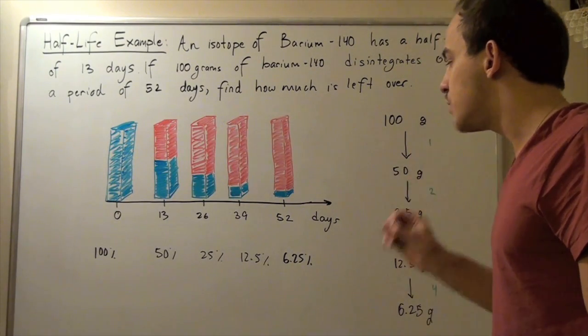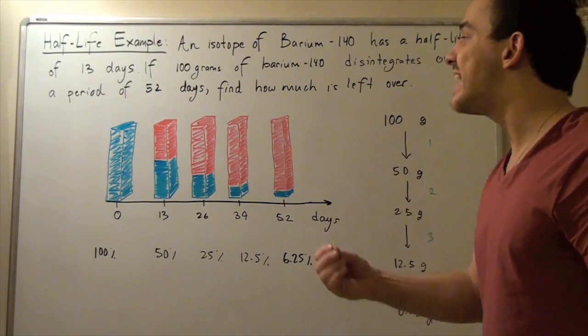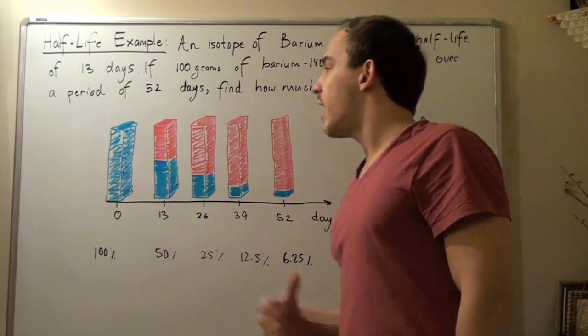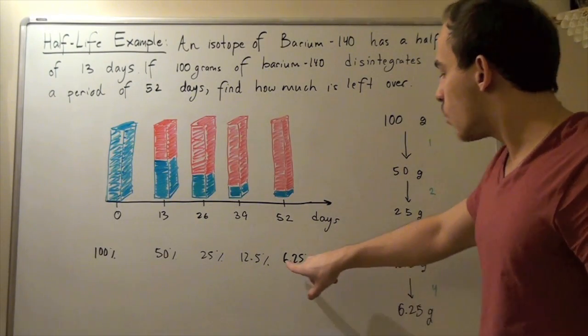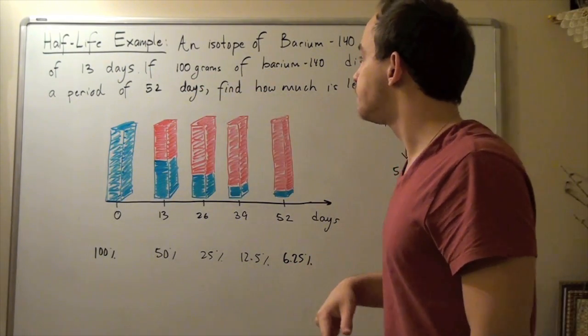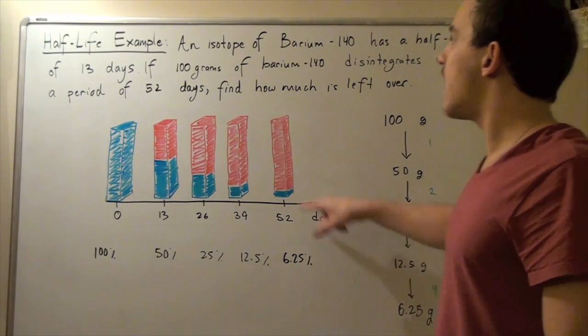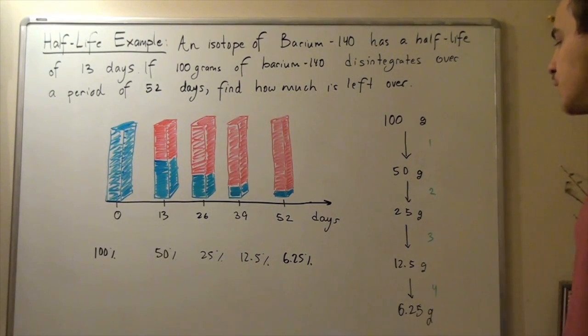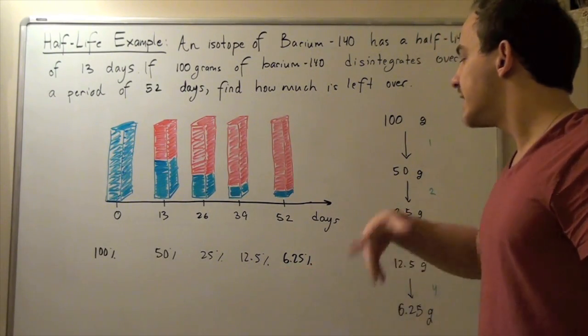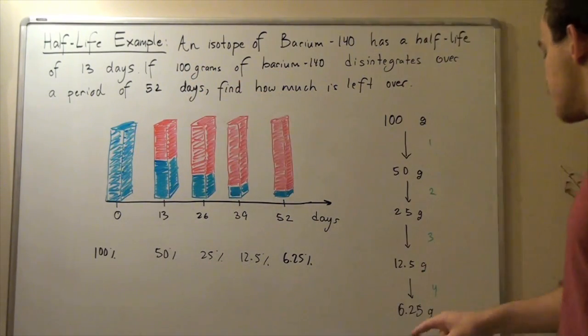So after 52 days or four half-lives, we have 6.25% of the initial 100 grams left over. And that's equivalent to 0.0625 multiplied by 100, which gives us 6.25 grams. So I basically take my percent, divide that by 100, and then multiply it by 100 grams, and I will find my final result.